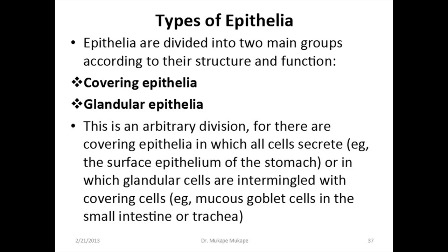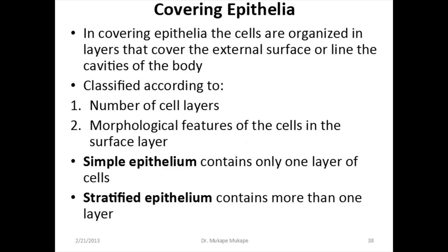The third specialized projection on the cell surface is cilia. Cilia are able to beat and move, and their function is to aid in the movement of substances. Cilia are mostly found in the respiratory tract — in the trachea and bronchi — and also in the fallopian tube. Now let's look at the types of epithelia. Epithelial tissue is divided into two groups based on structure and function: covering epithelia, which we are doing in this video, and glandular epithelia, which will be covered in another video.